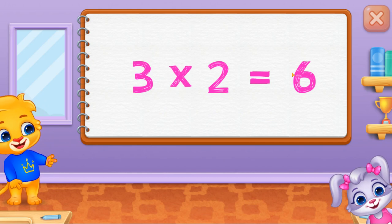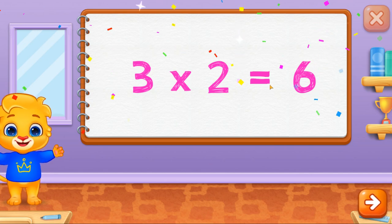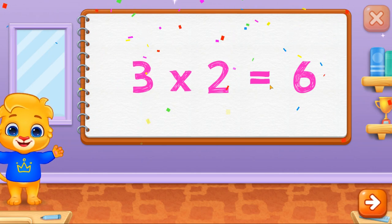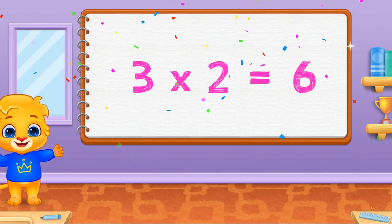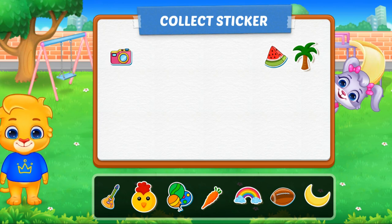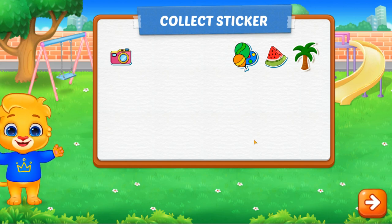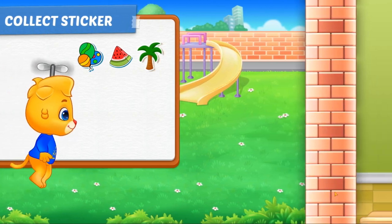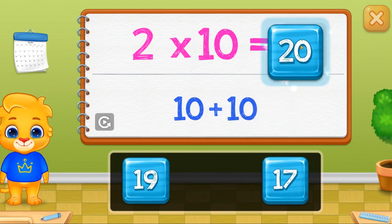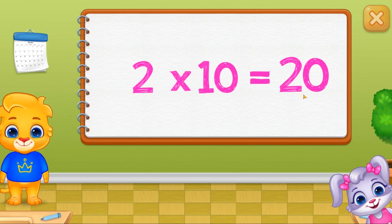Three times six. Three times two equals six. Two times ten equals twenty.